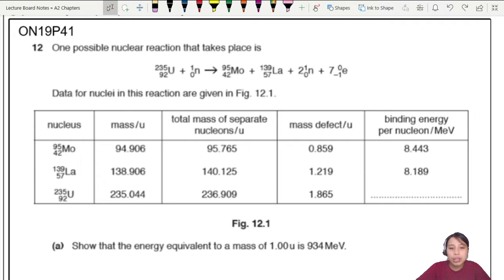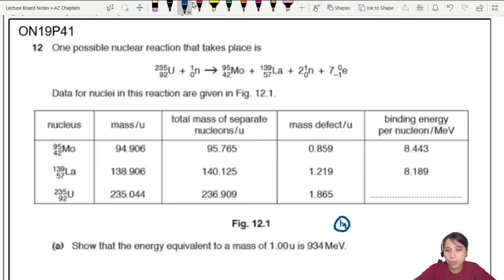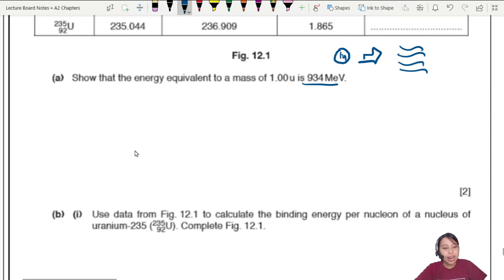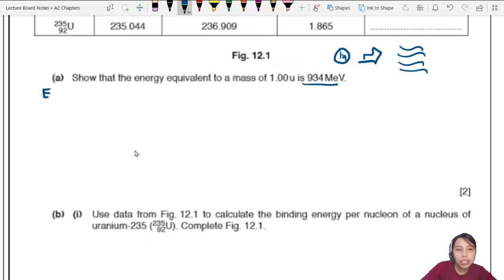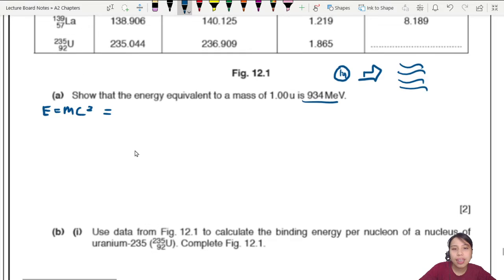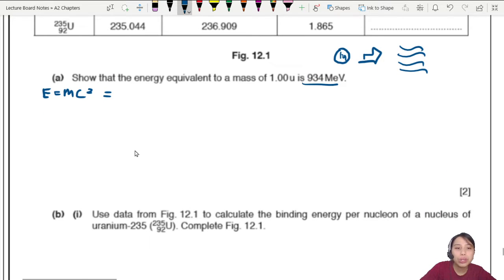The first part asks us to show that the energy equivalent to a mass of 1u is 934 MeV — meaning when you have 1u of mass and it's converted to energy, how much energy is that? We're going to use Einstein's equation E=mc² to prove it. Energy and mass are interchangeable, so we start with a mass of 1u.